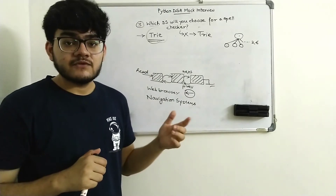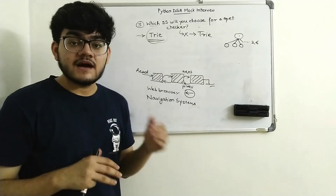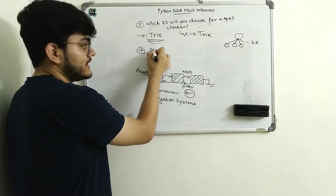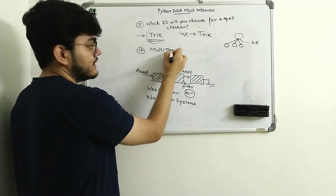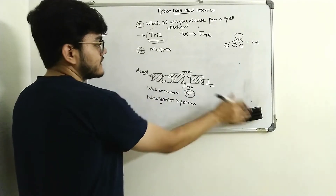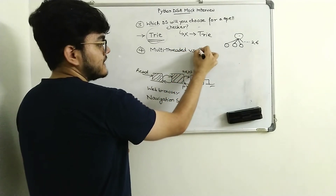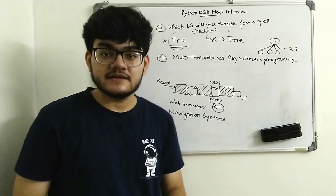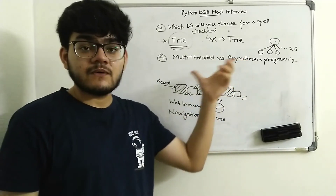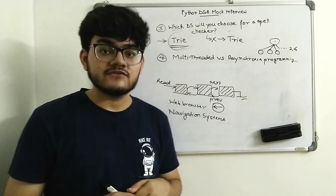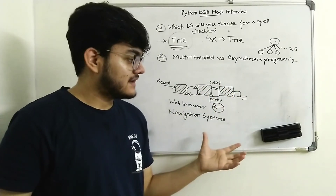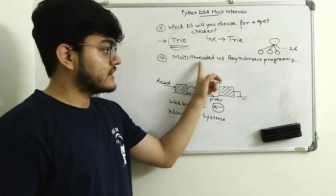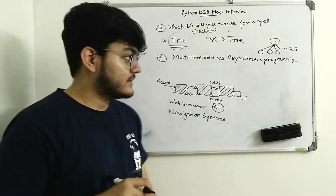When I was giving the interview, I was surprised to see that the questions were not always from Python — they will ask questions related to general programming. So the fourth question is: what is the difference between multi-threaded versus asynchronous programming? I have created a dedicated video explaining this concept in the coding interview preparation playlist, which I will link in the description below. Pause the video and explain the difference to yourself by giving a simple example, then explain it to the interviewer.